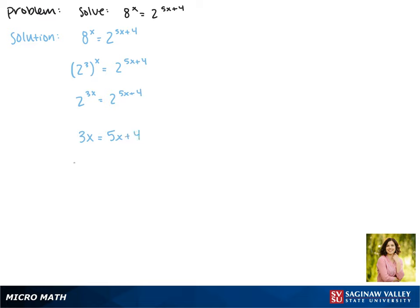Subtracting 5x from both sides, we get negative 2x equals 4, which gives us x equals negative 2. This is our solution.